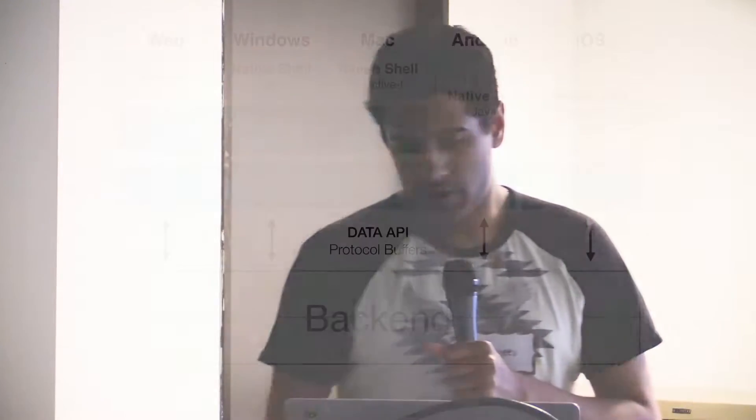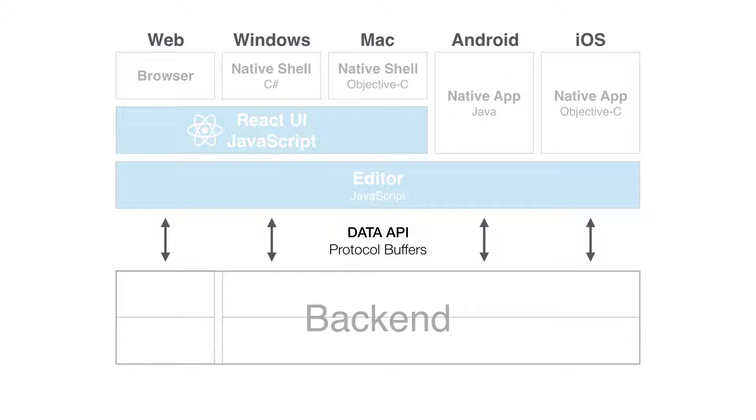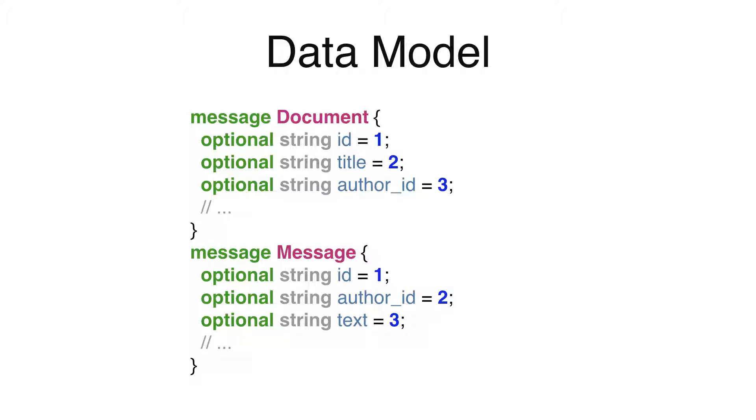When writing this front-end code, you shouldn't have to think about what platform you're on — that's where the API comes in. One of our constraints is that desktop and mobile apps need to work offline, so they communicate with the back-end differently than web does. We achieve this by having a uniform data model and API across all platforms using protocol buffers. Protocol buffers are a way to define structured data — objects that are easily serializable and very efficient. When you define protocol buffers, you can automatically generate code in JavaScript, C++, and Python, which are the three languages we use.